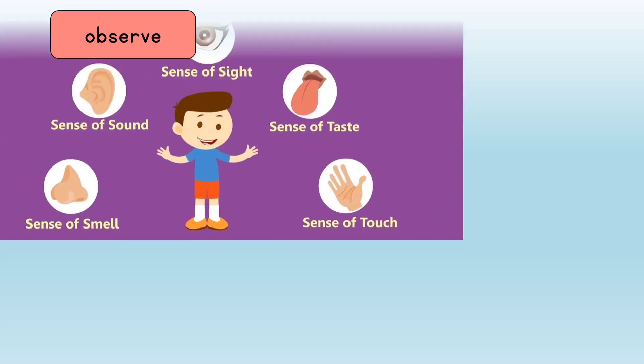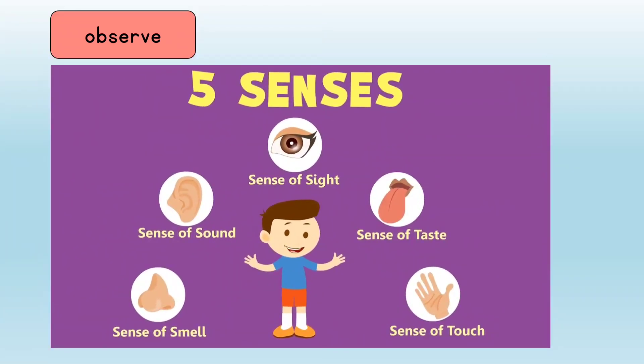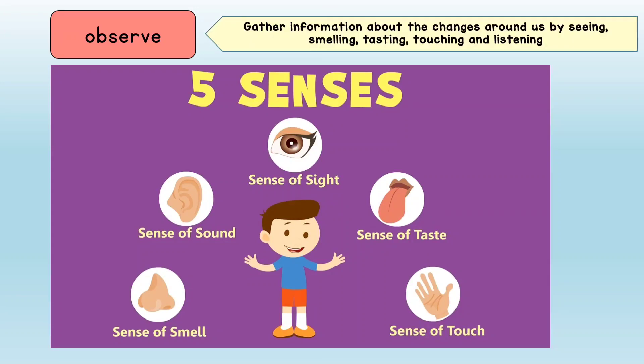Our lesson today is focused on the first science process skill, which is Observe. Observe means gathering information about the changes around us by seeing, smelling, tasting, touching, and listening — meaning that we use our five senses to help us observe.